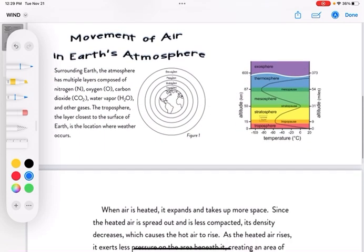The next section here, movement of air in Earth's atmosphere. Surrounding Earth, the atmosphere has multiple layers composed of nitrogen, oxygen, carbon dioxide, water vapor, and other gases. The troposphere, which we've learned is the layer closest to the surface of the Earth, is the location where weather occurs.